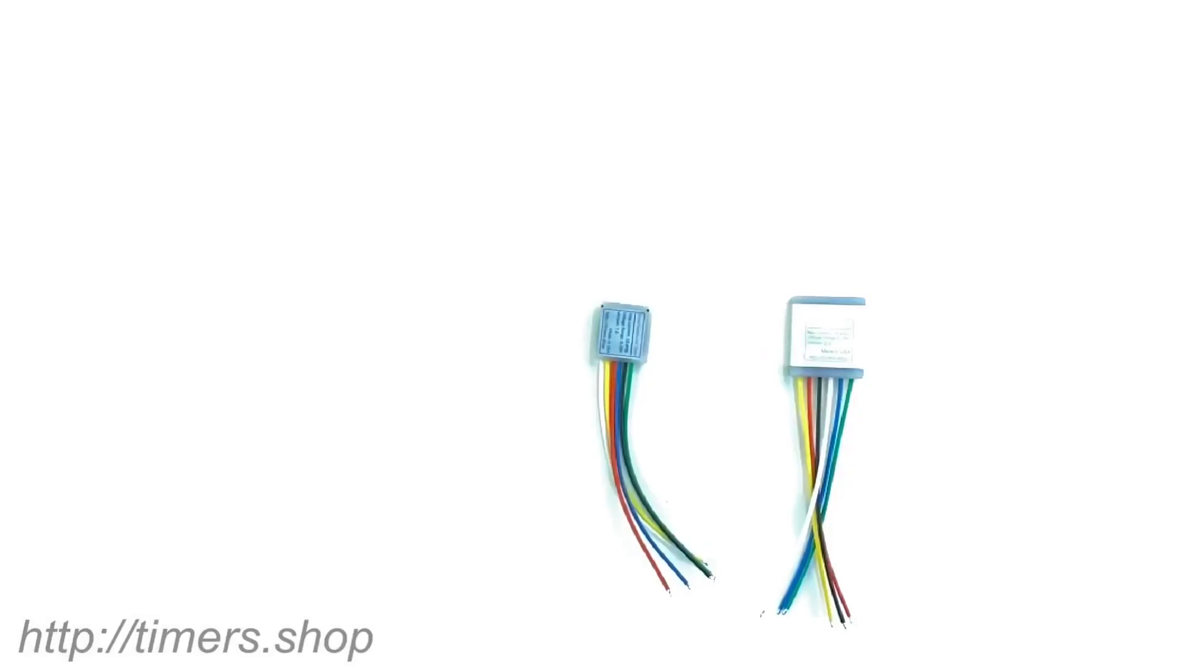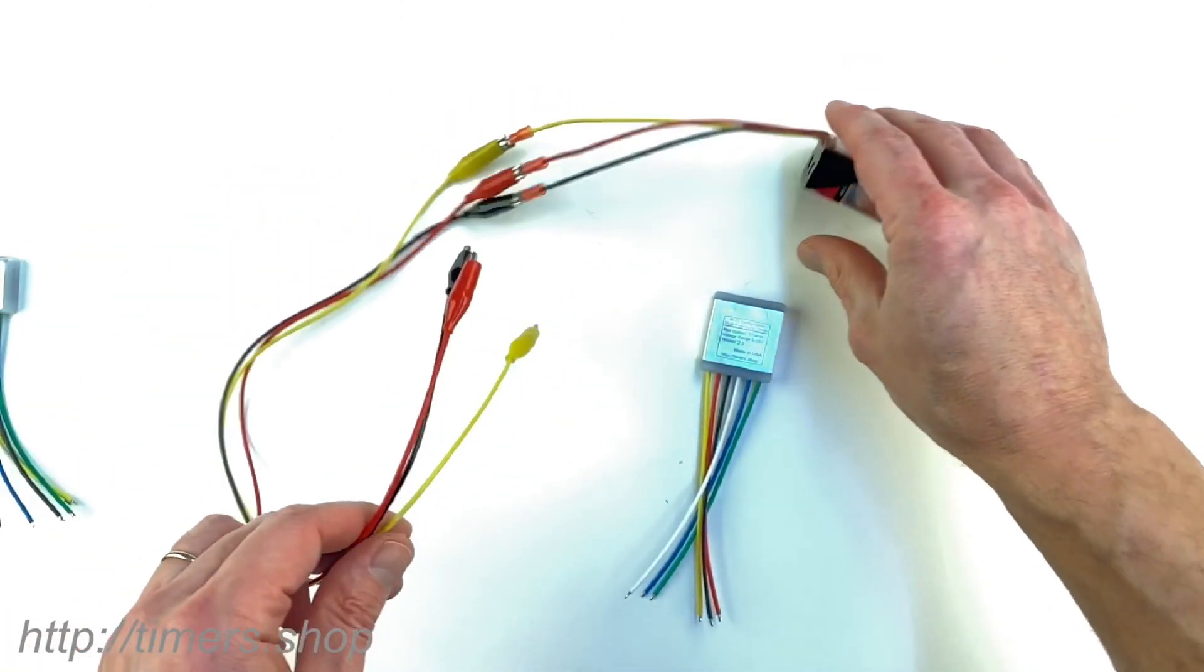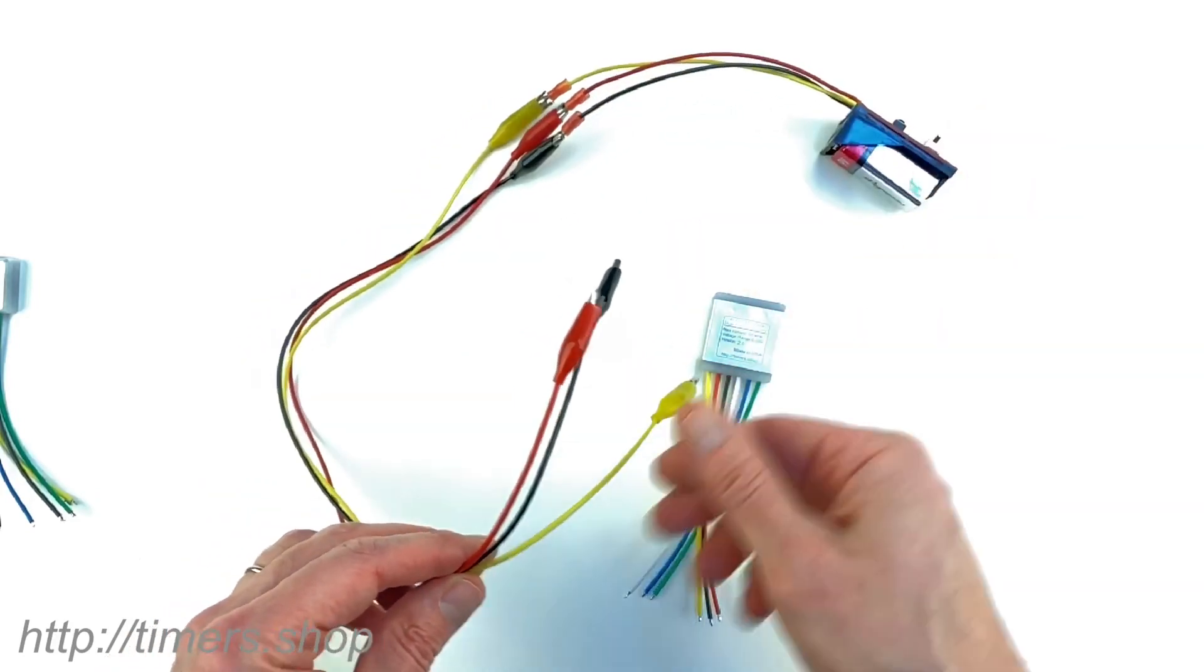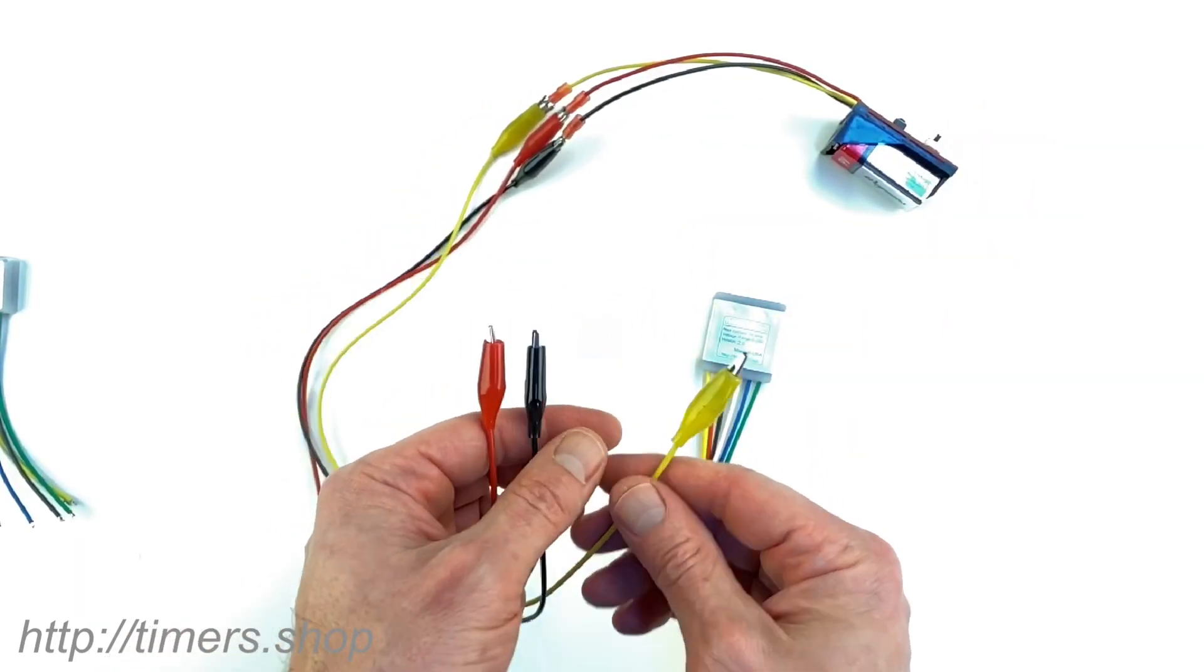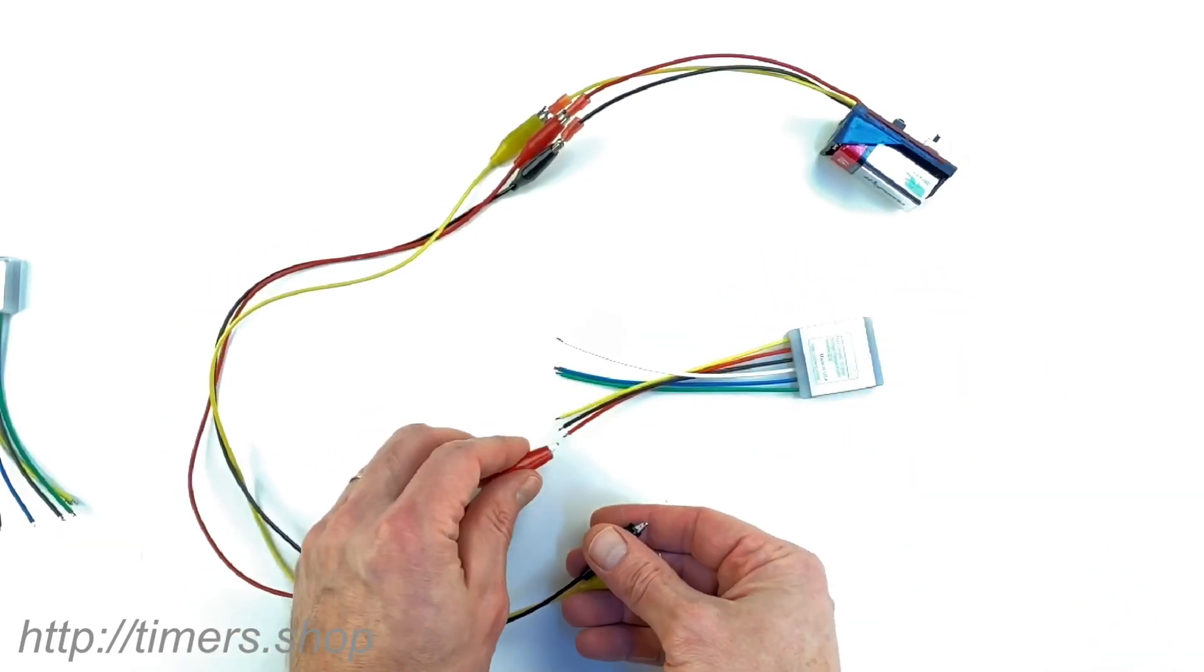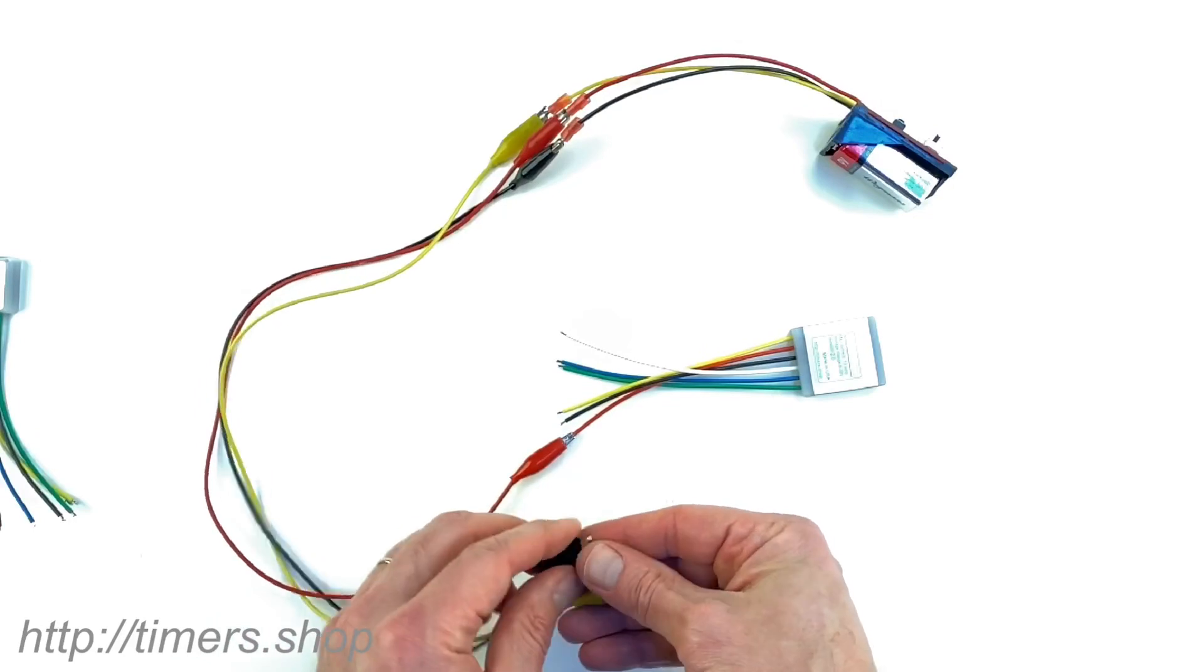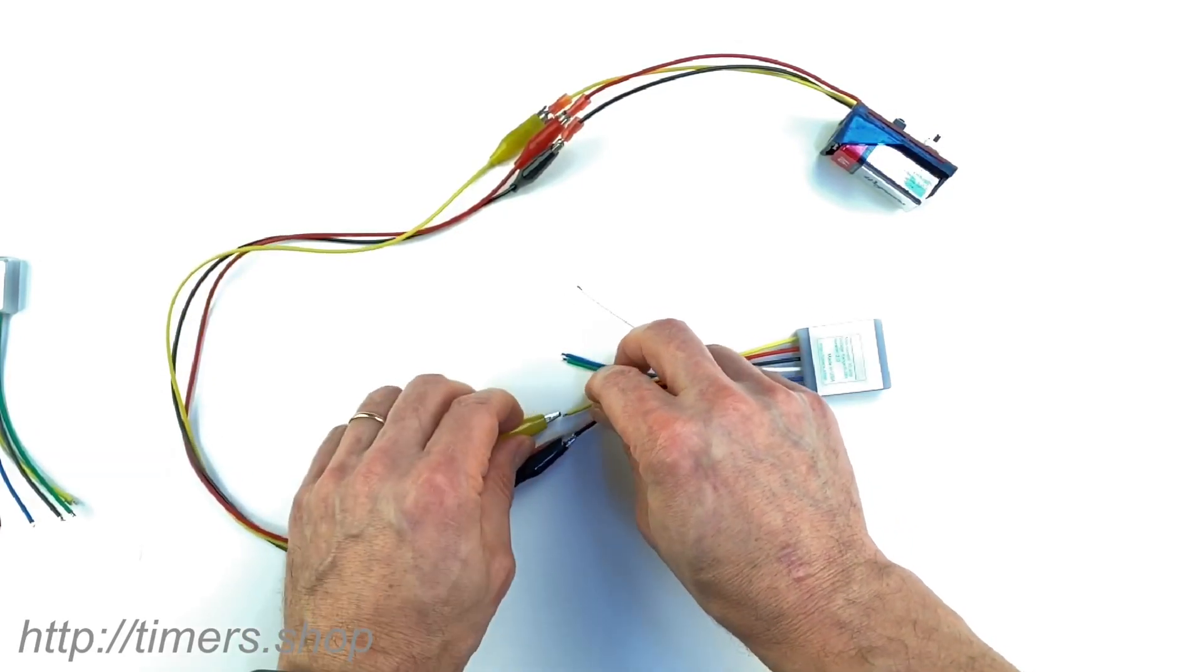So let's connect the timer and configure it with the smartphone. I have a 9 volt battery here with an LED. Red is the power, black is negative and yellow is the LED output. I'm going to connect red to red, black to black and yellow is output.